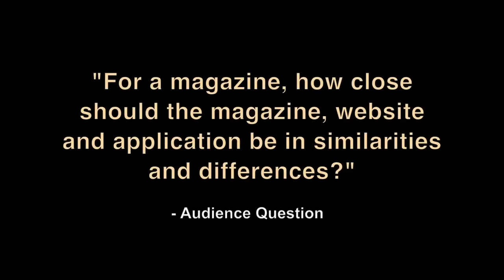Someone asked: how close should the magazine, the website, and the app be in terms of similarities and differences? A friend of mine has a great quote: 'platforms are not agnostic.' Every platform has to be designed for functionality and to serve the audience using it. The same people who read your magazine are not the same people who read it on the app or the website. You want each one designed to appeal to its specific audience, but you also want to brand it so it all feels like the same publication.